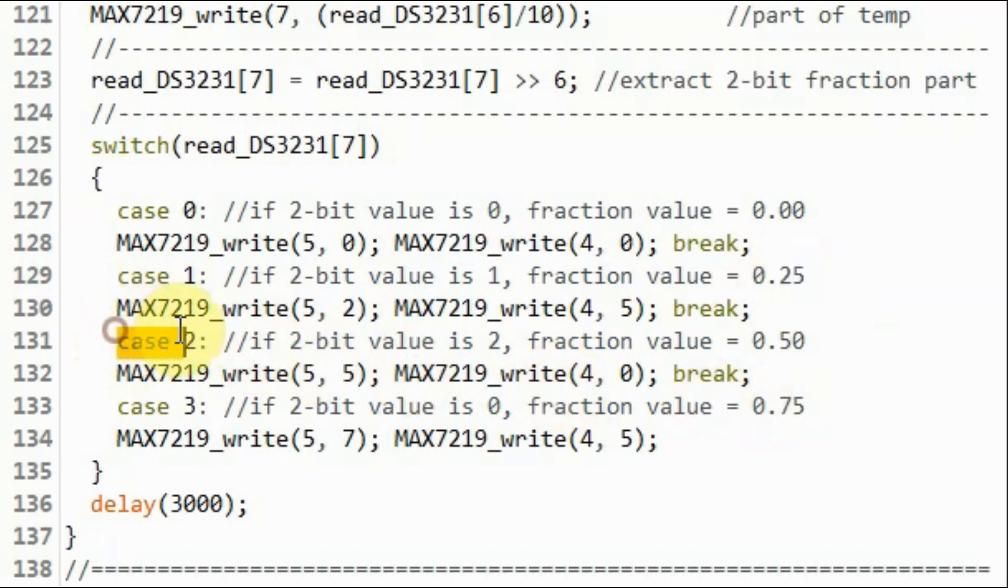If the value is 2, we display .5. And if the value is 3, then we display .75.